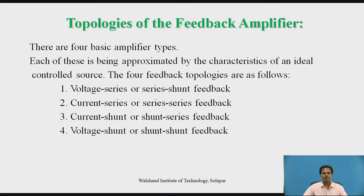Topologies of feedback amplifier: there are four basic amplifier types or topologies, each being approximated by the characteristic of an ideal controlled source. The four feedback topologies depend upon the type of output quantity taken and the way in which the sampled output quantity is given back to the input side of the amplifier. Basically, there are four types of feedback amplifier topologies.